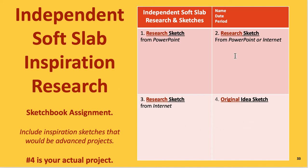For the sketchbook assignment, divide a page into quarters. One research sketch must come from the PowerPoint. The second can also be from the PowerPoint, or from the internet if you can't find two you like there. The third comes from your internet search. The fourth shows your ideas combined into a final design — draw little arrows showing what inspires your original idea.